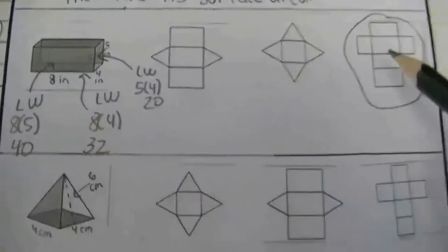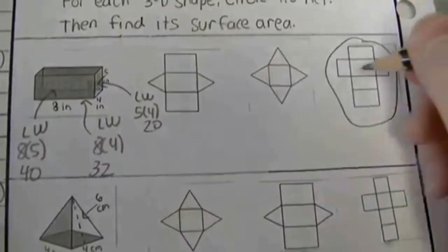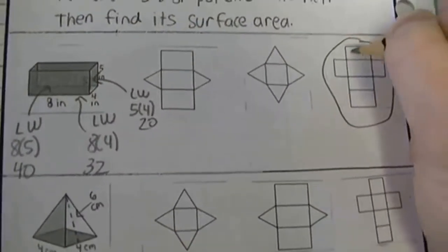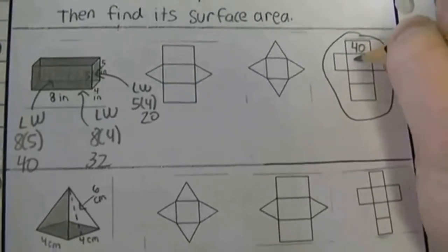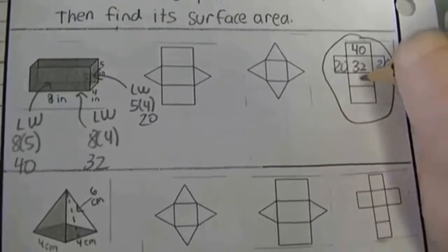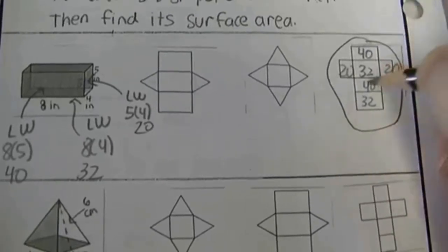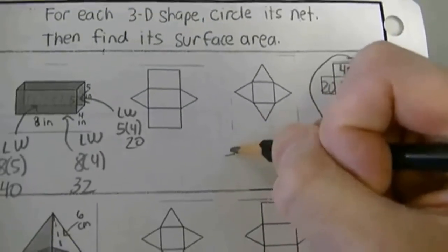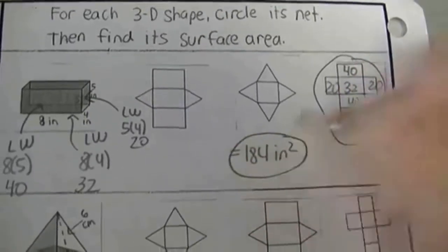Now I'm going to use the net so I account for all the faces of this rectangular prism. This face corresponds to 40, then 32, this part is 20, 40, and 32. When I add all of those together, I end up with 184 inches squared as the surface area — unless I messed up.